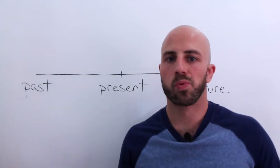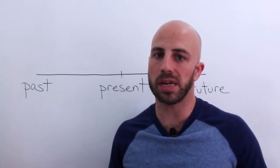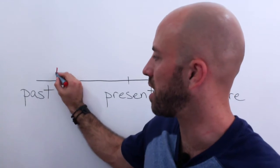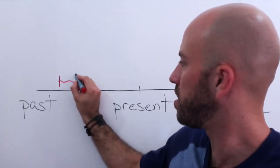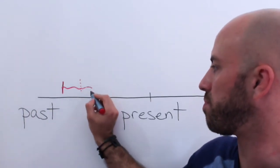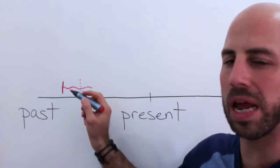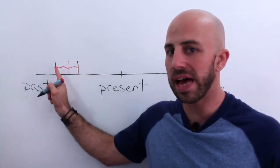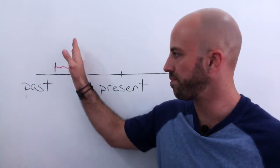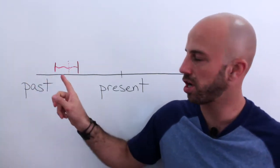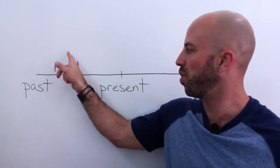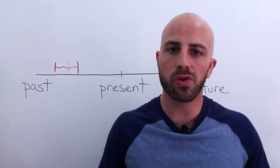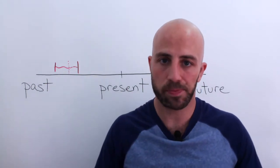Rule number one: an action that has been interrupted without being finished in the past. We could draw an action that was interrupted in the past — and maybe you completed it after. Looking at the chart: 'I was eating breakfast when she called.' Look at the example, look at the rule, and write your own examples below.